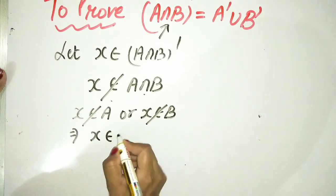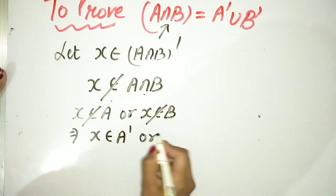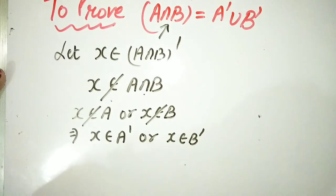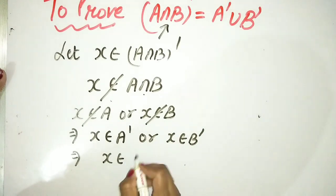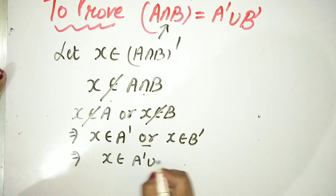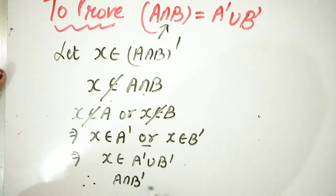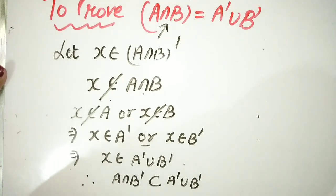If x doesn't belong to A, then x belongs to A complement. If x doesn't belong to B, then x belongs to B complement. Combining using 'or' gives union. Therefore, A intersection B complement is a subset of A complement union B complement.